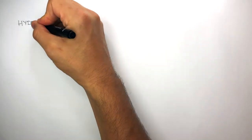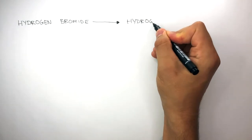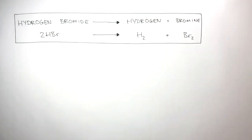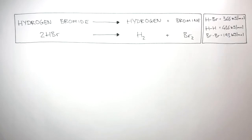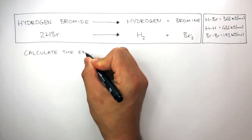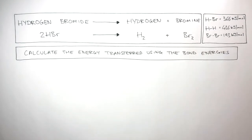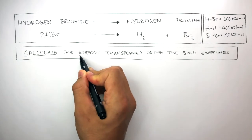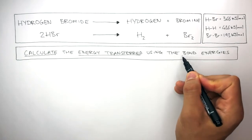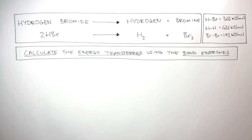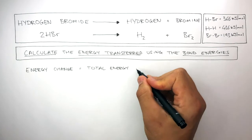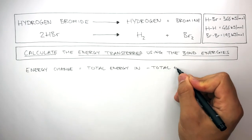When hydrogen bromide breaks down to form hydrogen and bromine, this is the balanced symbol equation. In the exam you'll be given bond energies specific to this chemical reaction, where you'll be asked to calculate the energy transferred using the bond energies. To do this, you need to use the equation: energy change equals total energy in take away total energy out.